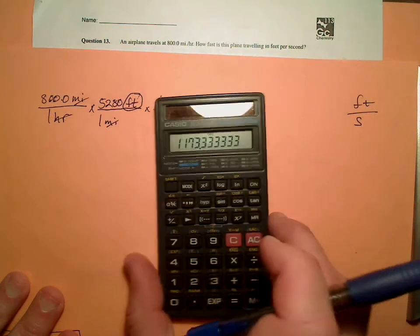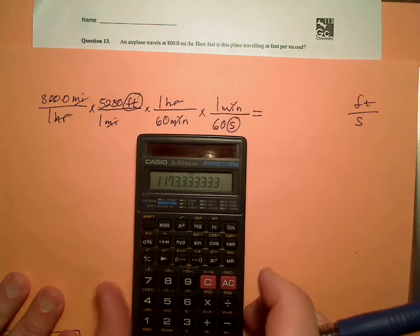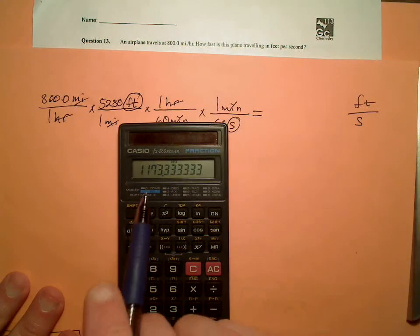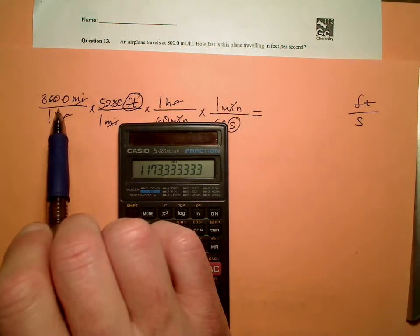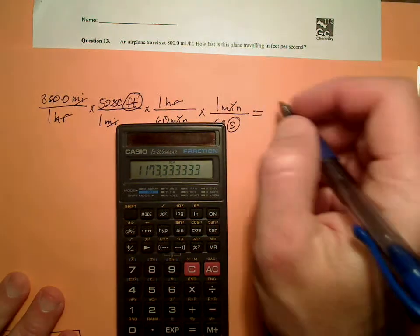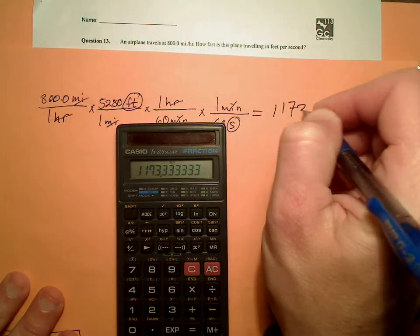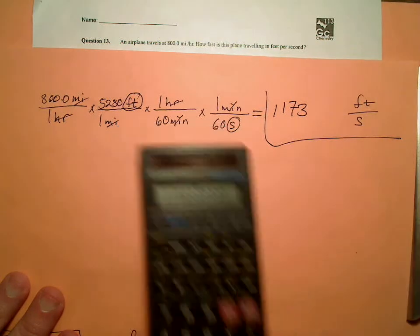So I have 1,173.333. So we're good to, what, 4 sig figs here. Yeah, so 4 sig figs. So 1,173 feet per second. There we go.